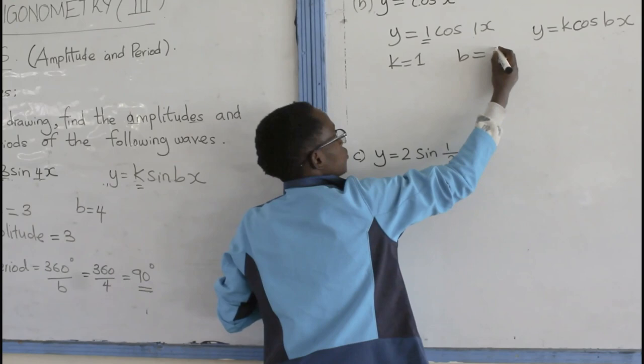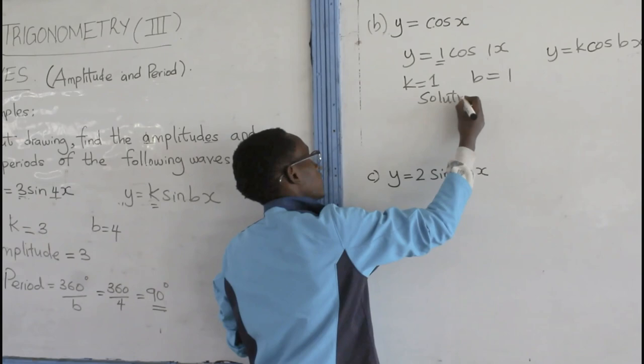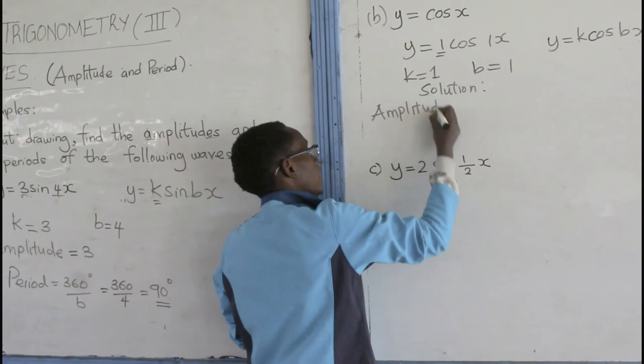So, what is the amplitude? The amplitude is given by the value of K. So, the amplitude in our case here is 1.